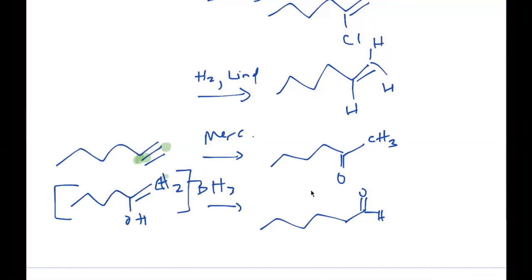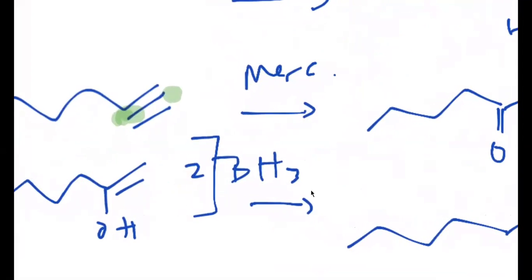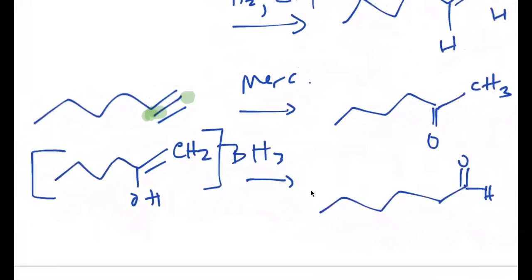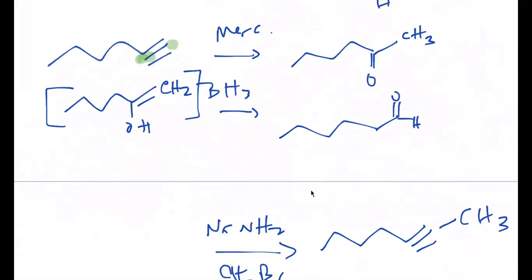And then for the second one, which is a hydroboration, it's going to give you an enol, but it's going to be here. And whenever that rearranges, it's going to give you the aldehyde that you see over to the right because it's anti-Markovnikov.